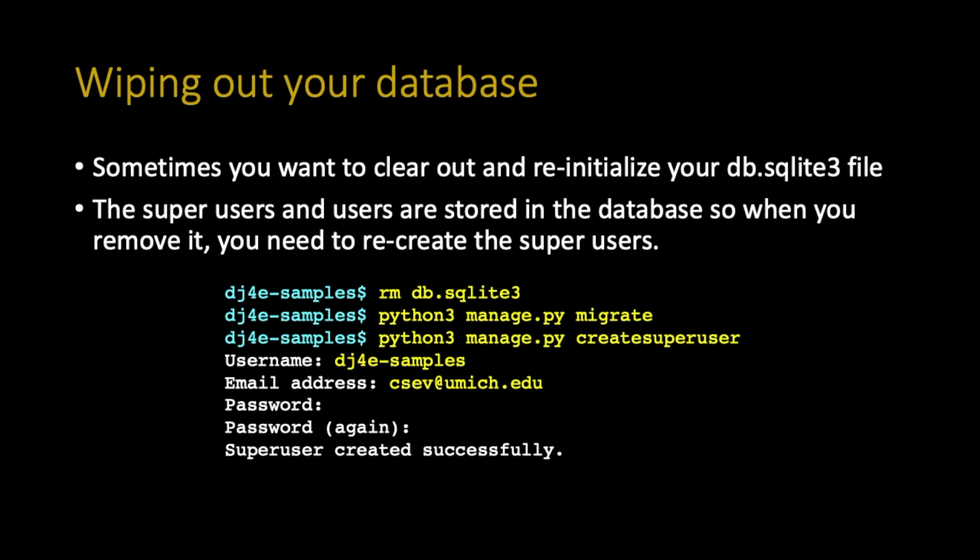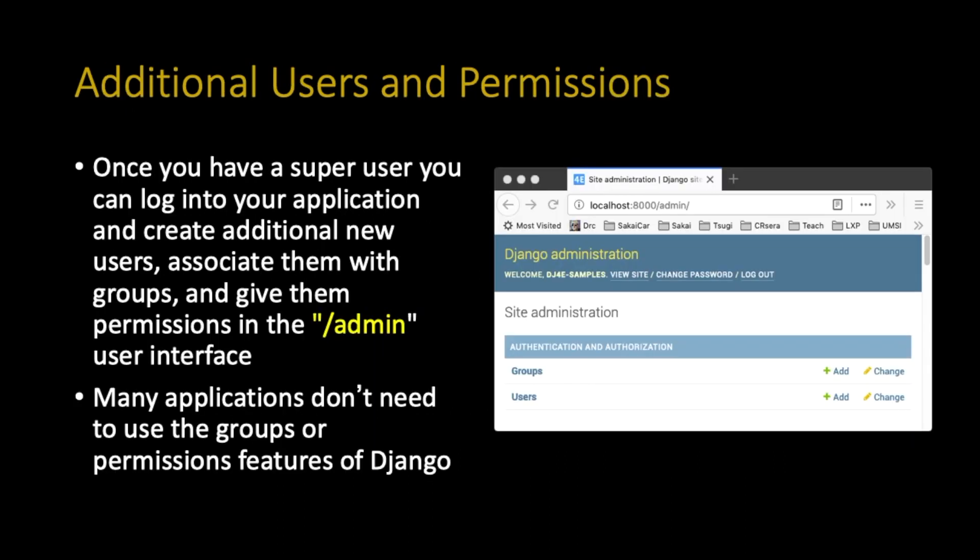If you're going to start fresh, you've got to remove the DB SQLite file. That gets rid of all your users, all your super users, and any data you've put in — it's gone. Then you have to bring it back up with a bunch of empty tables using manage.py migrate. After that, you'll have to create your super users again.